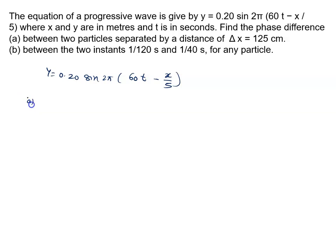For part (a), we use the formula delta phi equals 2 pi by lambda into delta x. What is the value of lambda?